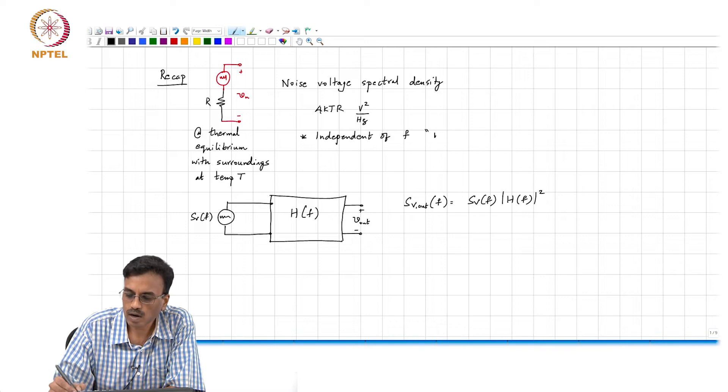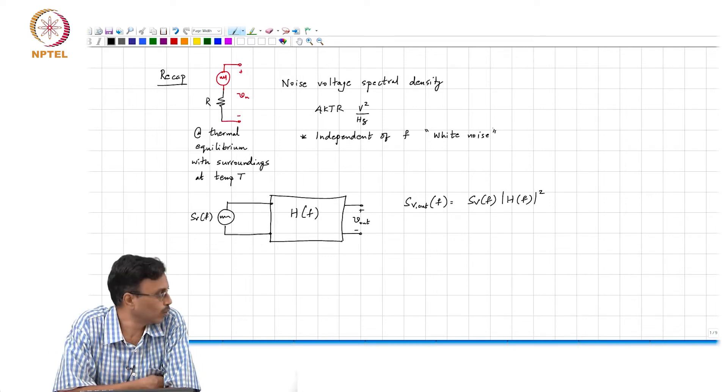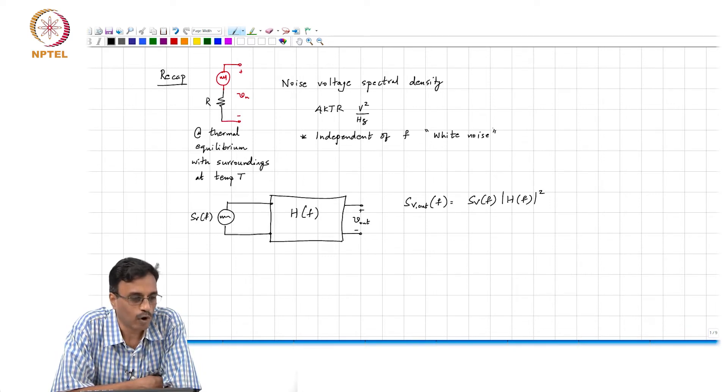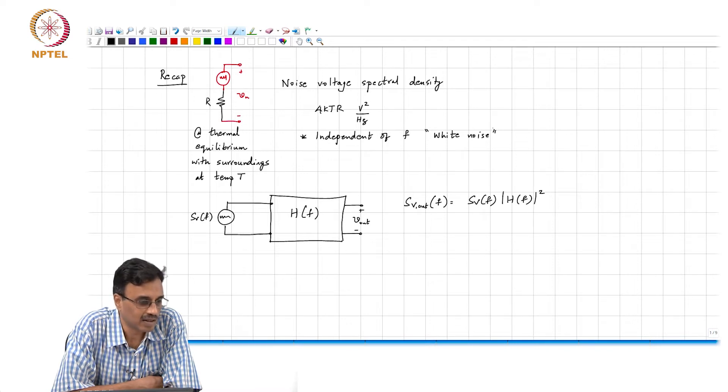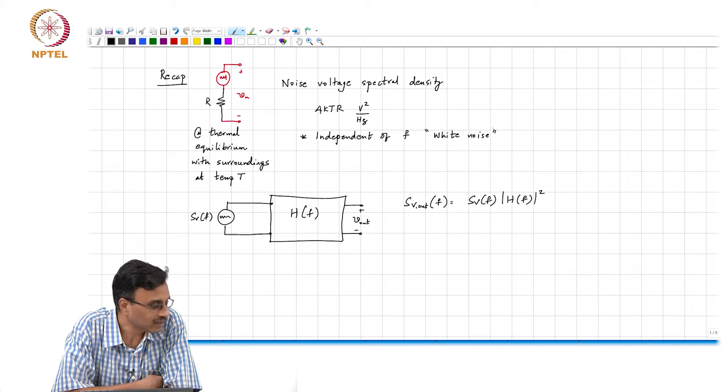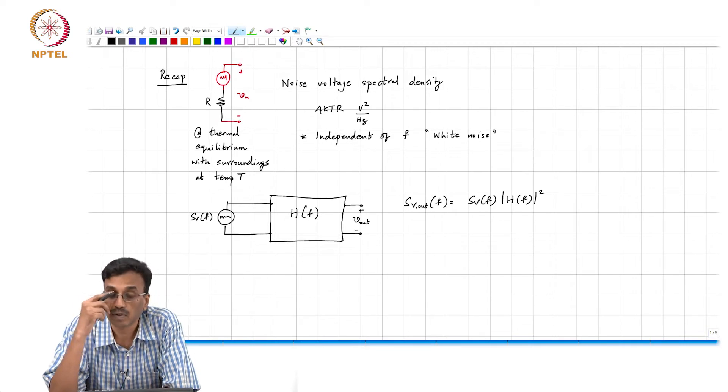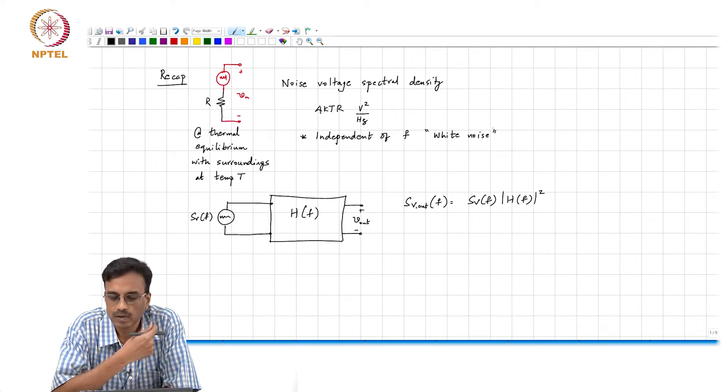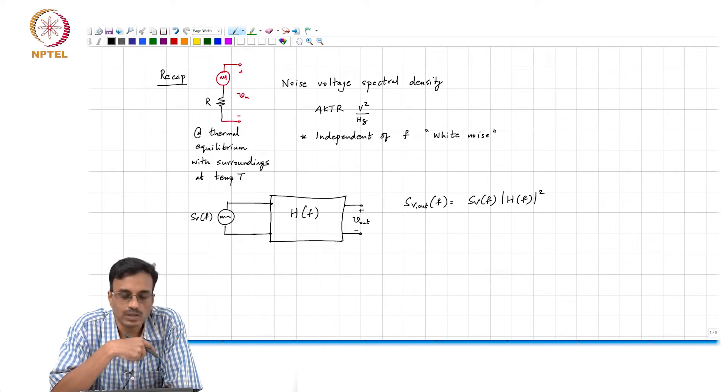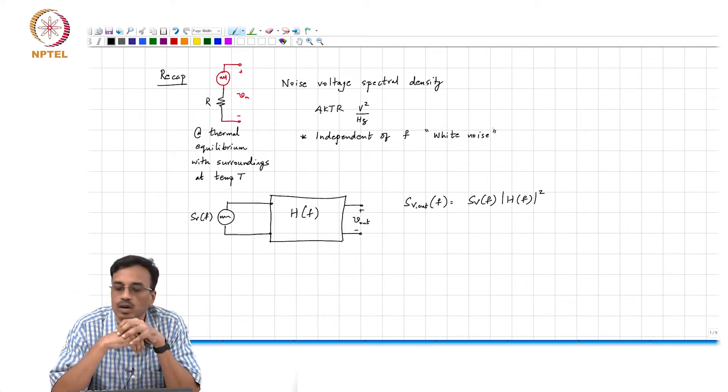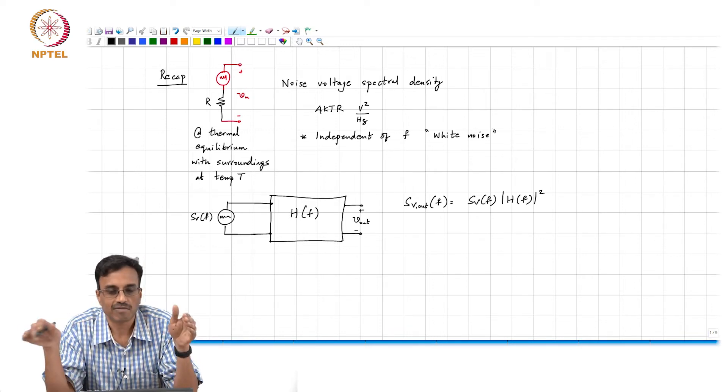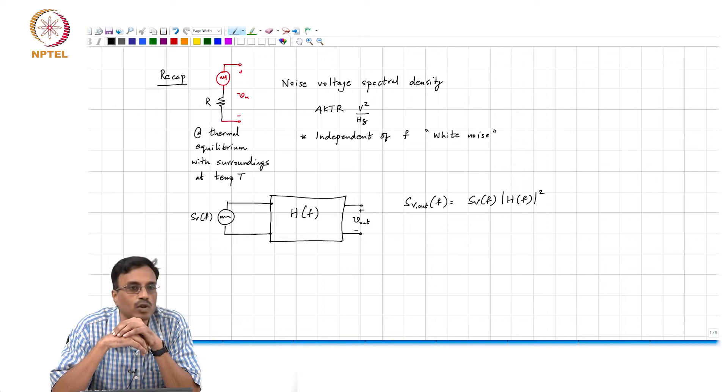In other words, this is often what is called white noise. The reason is simply the following: optically if you have all colors, the resulting color actually appears white to us. Colors in optics are basically because of light of different frequencies. In a similar way, if you have noise corresponding to all frequencies in equal sense, it is called white. Obviously, if the noise spectral density is not uniform with frequency then it is called colored noise.